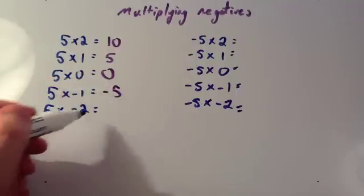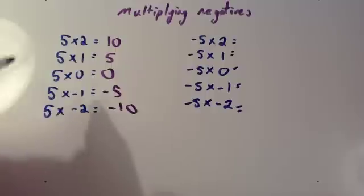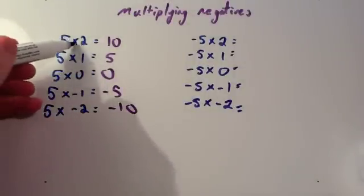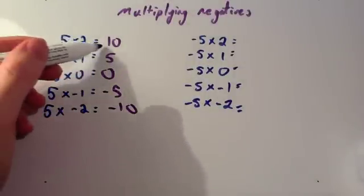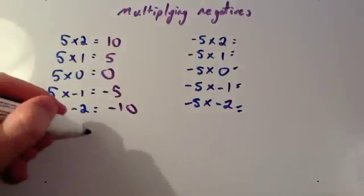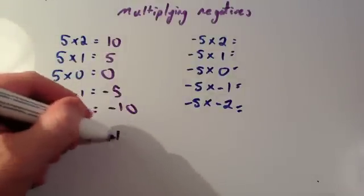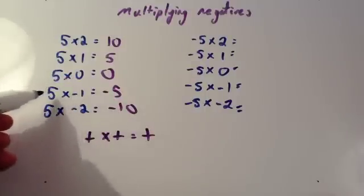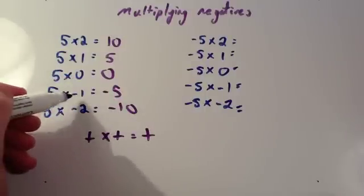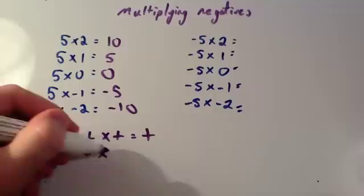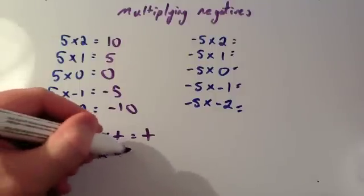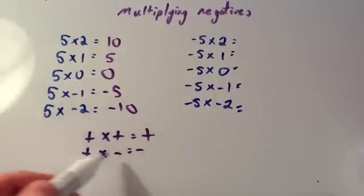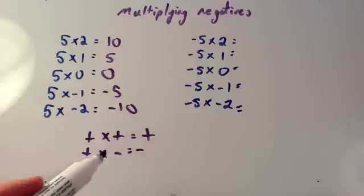5 times minus 2 is minus 10. From this, we can deduce a few things. We can deduce a positive times a positive gives you a positive answer. And we can deduce that a positive times a negative gives you a negative answer. So if you times a positive number by a negative number, you'll always get a negative answer.